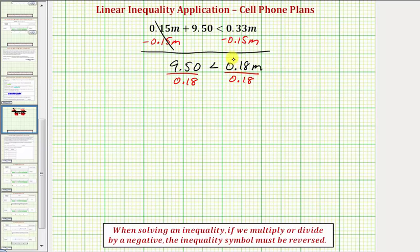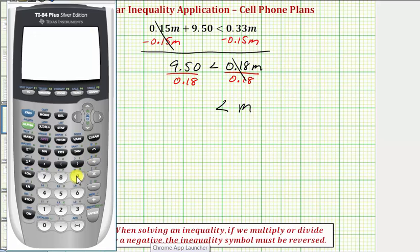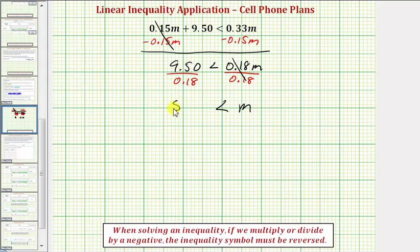Looking at the right side, notice how this quotient would be one, so we have one times M or just M. So we have M is greater than this quotient here, which we'll evaluate on the calculator. So we have 9.5 divided by 0.18. If we round to one decimal place, this would be approximately 52.8. So let's go ahead and use the rounded approximation of 52.8.